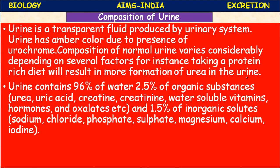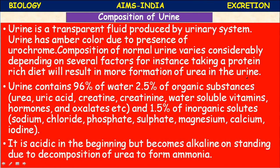Organic substances include urea, uric acid, proteins like creatine and creatinine, water-soluble vitamins, hormones, and oxalates. The urine also contains 1.5 percent inorganic solutes - salts like sodium chloride, potassium sulfate, magnesium, calcium, and iodine.